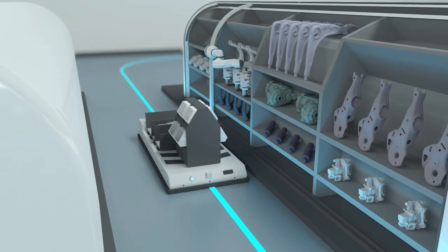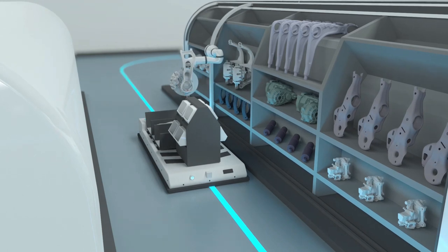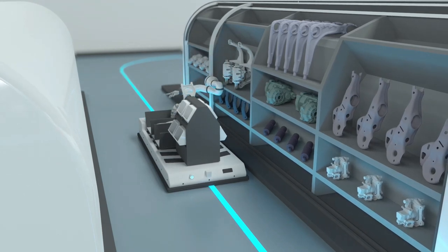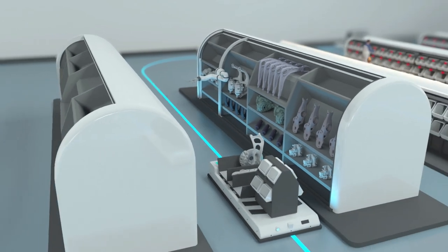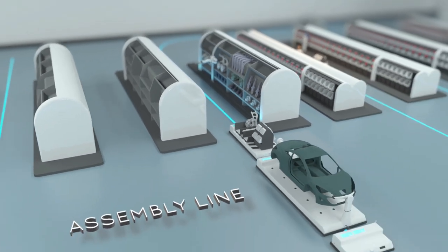This process, known as full kitting, has been rolled out across our workshops to guarantee flexibility. The kit is then matched up with the vehicle on the production line.